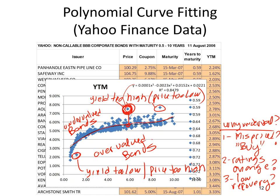Looking at a bond below the curve: if it has a very low yield relative to other triple-Bs of the same maturity, that bond is overvalued — it's giving a low yield, meaning its price is too high. One approach to security selection is to use this best-fit curve: bonds above the curve are undervalued, bonds below are overvalued. However, this third-order polynomial does a terrible job fitting the very short end of the curve, so I would not make security selection judgments based on the short end.